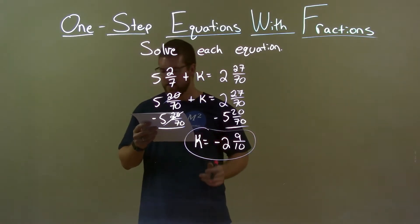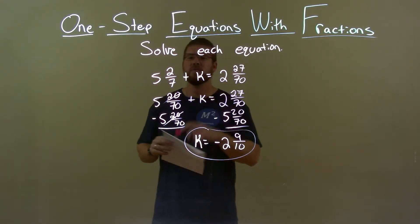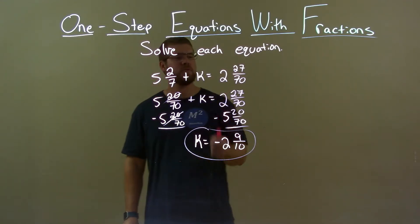So we just simplify that, and there we go. So quick recap, we're given 5 and 2 7ths plus k equals 2 and 27 over 70.